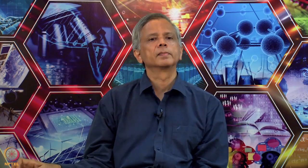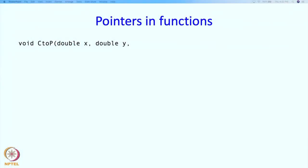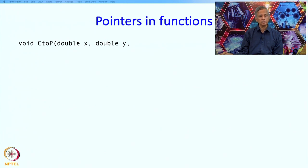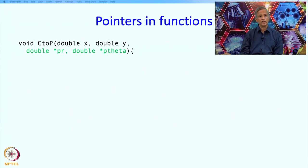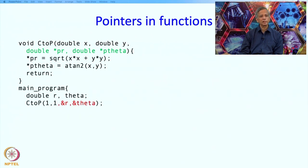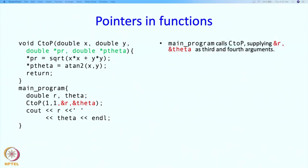Now we are going to see a use of pointers when we write functions. We are going to write a function which converts Cartesian to polar coordinates. It will receive the Cartesian coordinates by value in parameters x and y. In addition, it will have two pointer parameters, pr and ptheta. pr has type double*, meaning it is an address of a double value. Similarly, ptheta is the address of a double value.